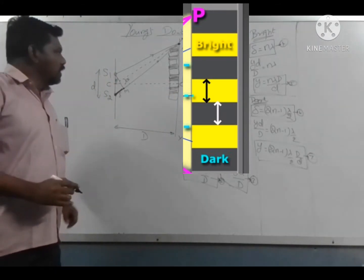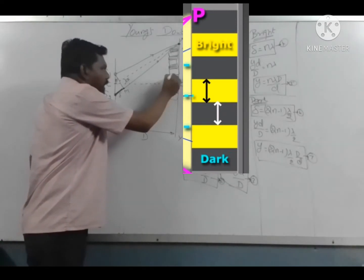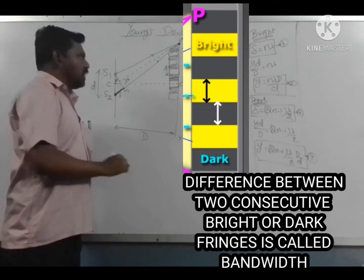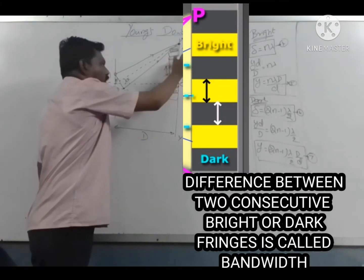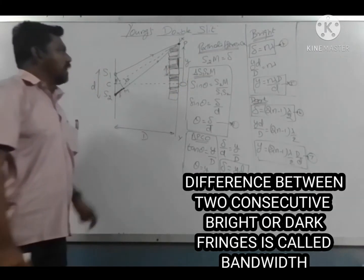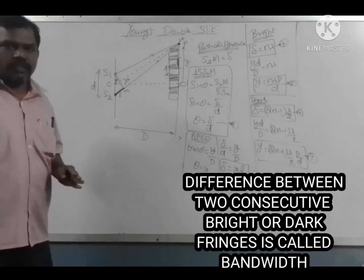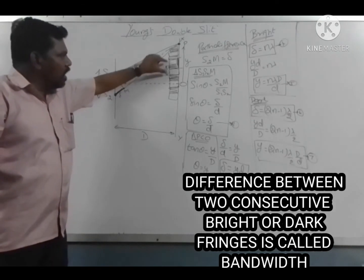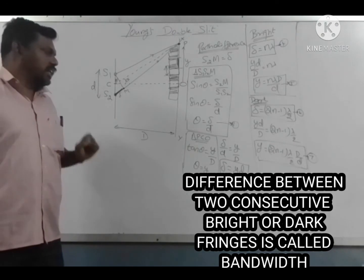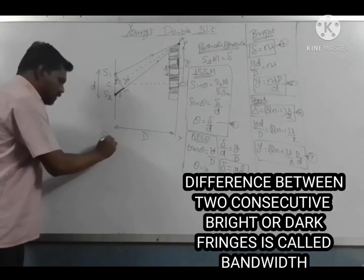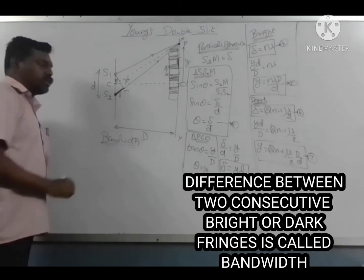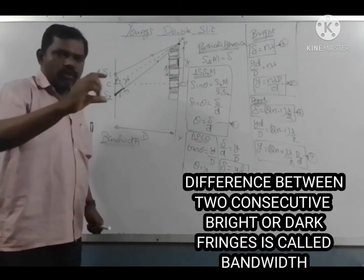The distance between consecutive bright fringes or consecutive dark fringes is called bandwidth. The bandwidth is the distance between two consecutive bright or dark fringes on the screen.